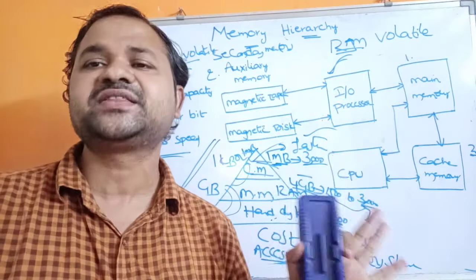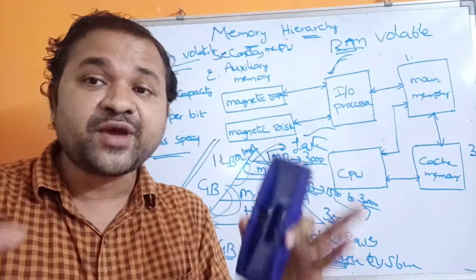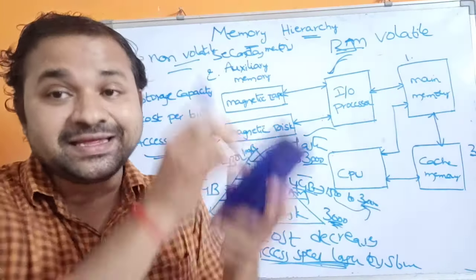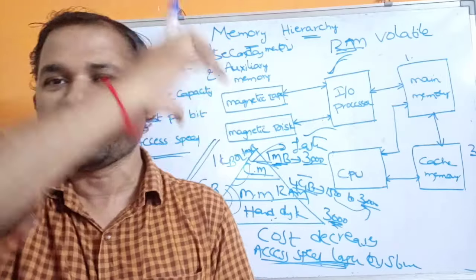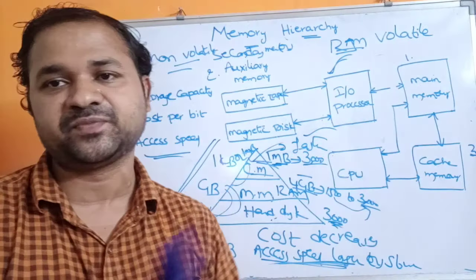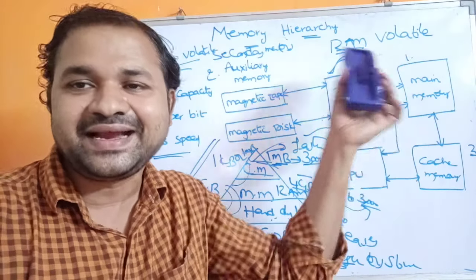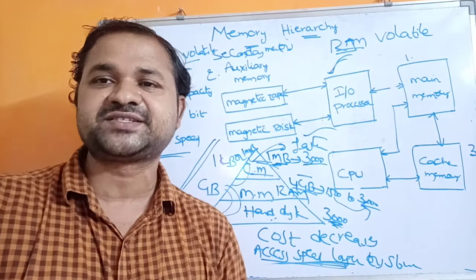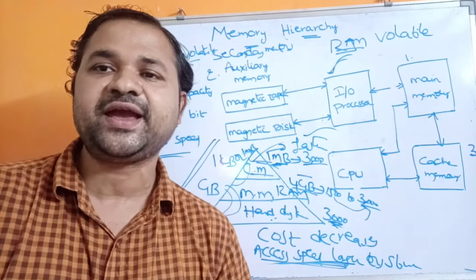If a program is not needed by the CPU, it is stored in auxiliary memory. When the CPU wants to execute a program, it is placed in main memory. If that program has frequently used instructions — a block of code used repeatedly — that block is transferred from main memory to cache memory, because CPU can access cache data faster. This is the concept of memory hierarchy. In the next video, we will discuss main memory, secondary memory, cache memory, and virtual memory.